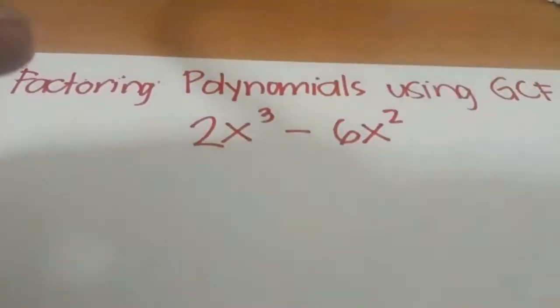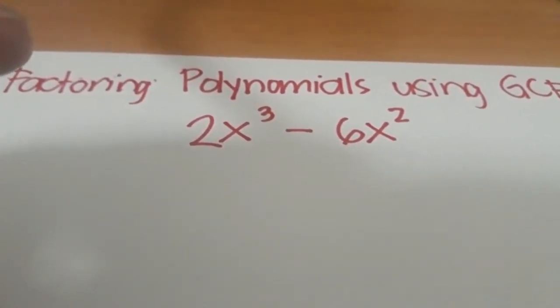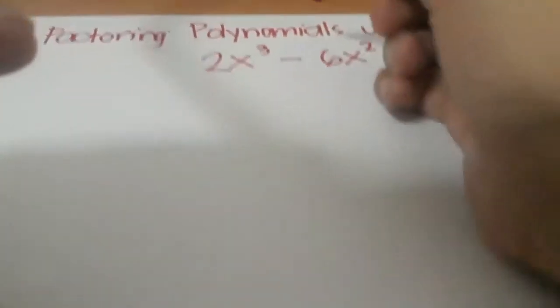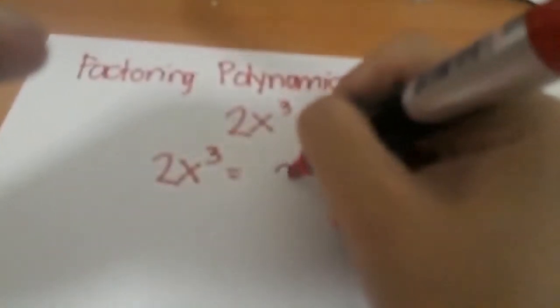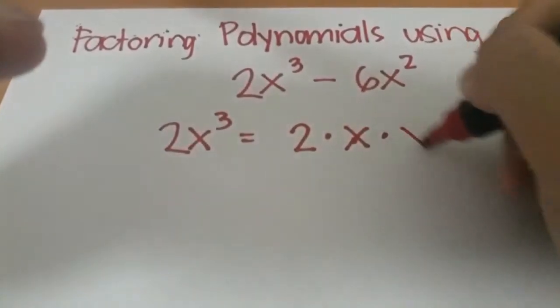Step one is we have to get the GCF for all of the terms in our polynomial. So for this one, for 2x³, the factor is 2 times x times x times x.